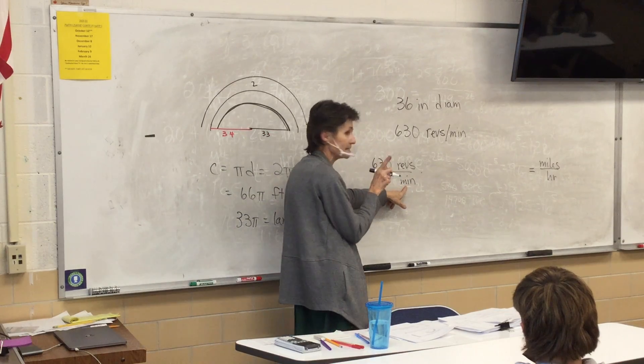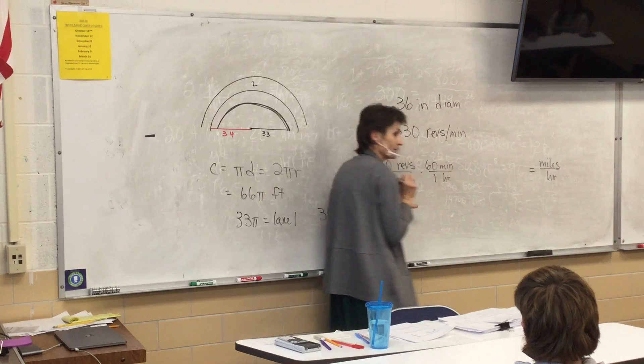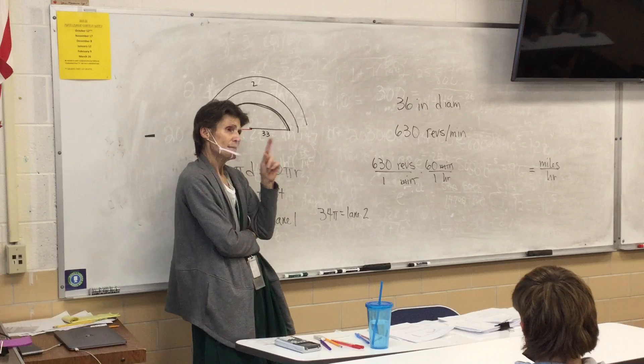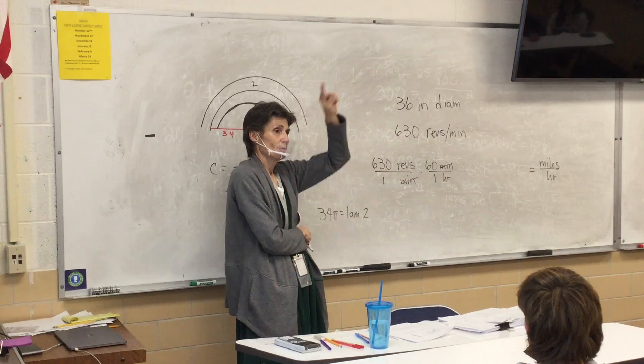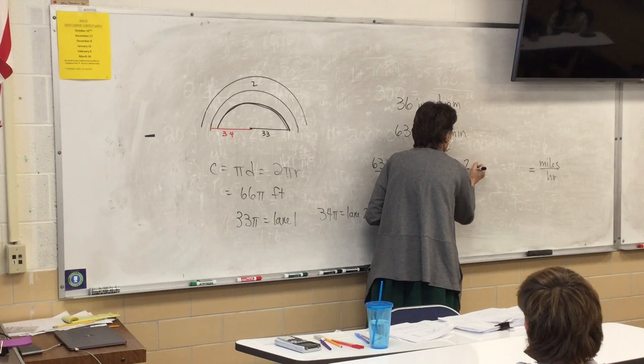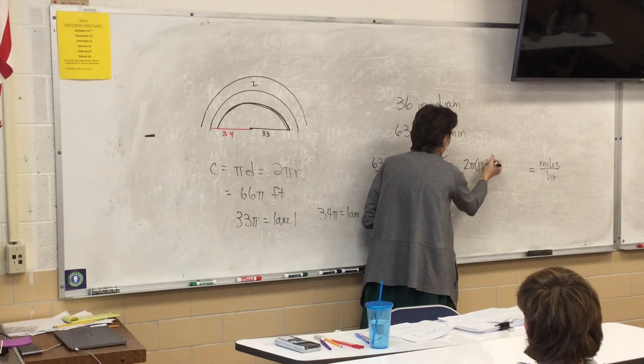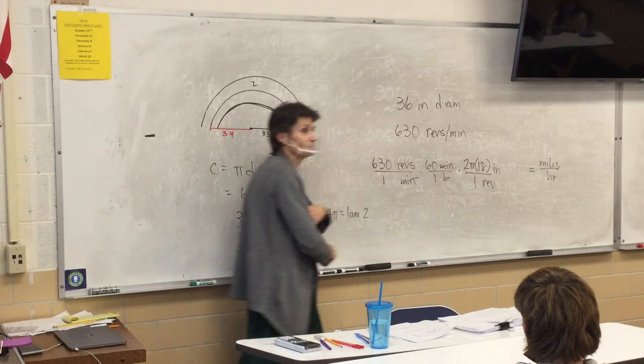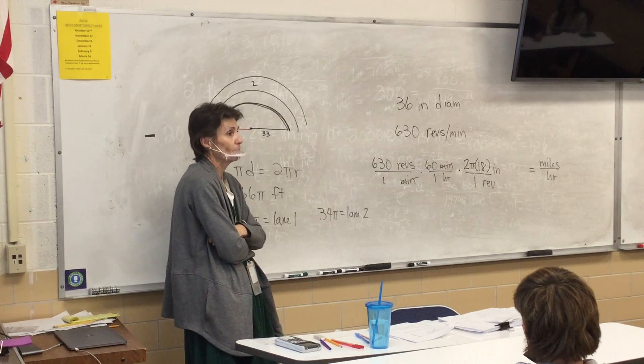Now, I've got minutes. That's an easy fix. 60 minutes, one hour. Would you agree with that? So now I've got my hour where I need it, so I'm done with that. Now, I've got to get from revolutions to miles. What do we know about a revolution? It's a circumference. So 2 pi r inches is one revolution. Would you agree with that? Or 36 pi inches is one revolution?